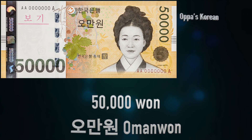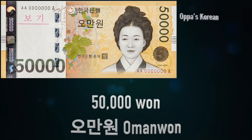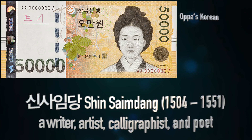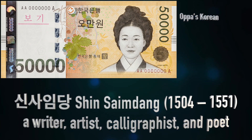The last one is 50,000 won, which is the largest bill. The front side of the bill features Shin Saimdang. She was the mother of Lee Yi, who features on the 5,000 won bill. She was a writer, artist, calligraphist, and poet.